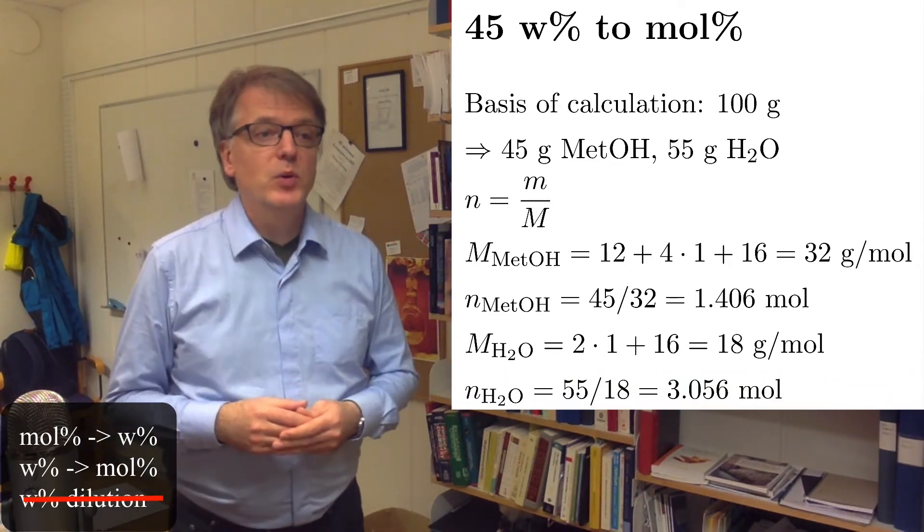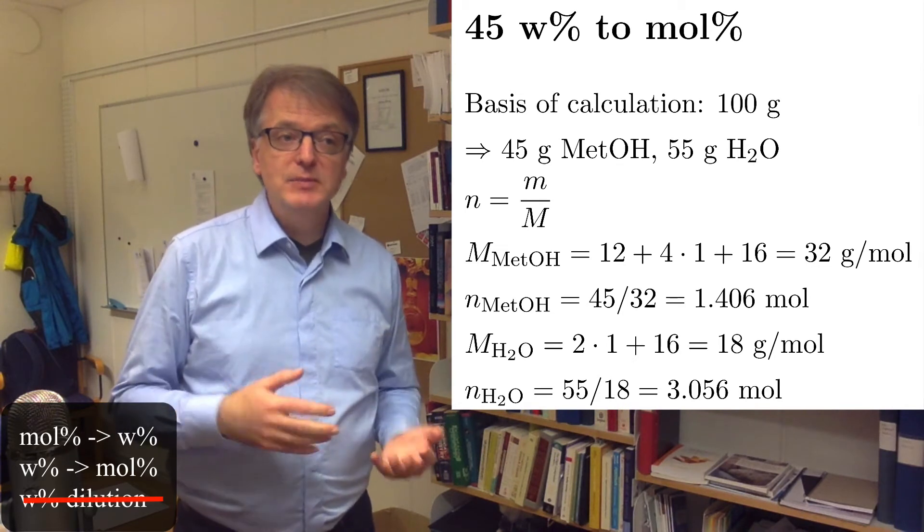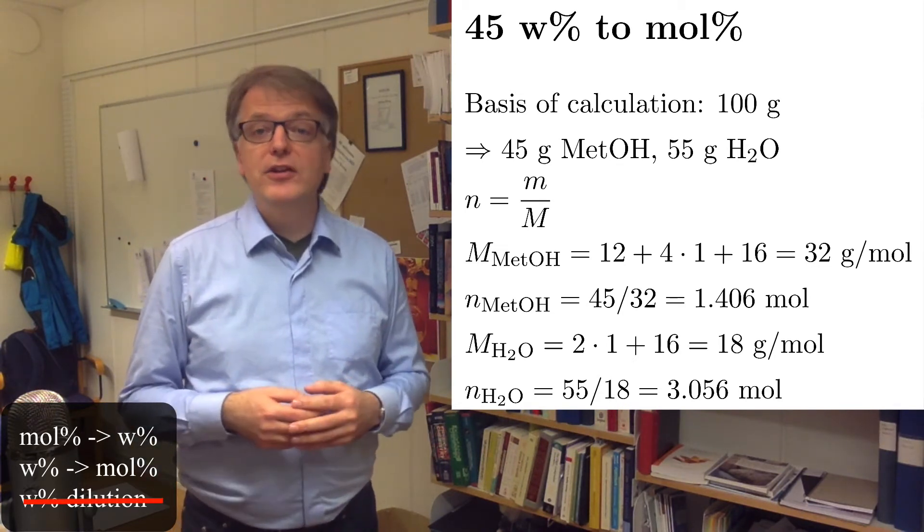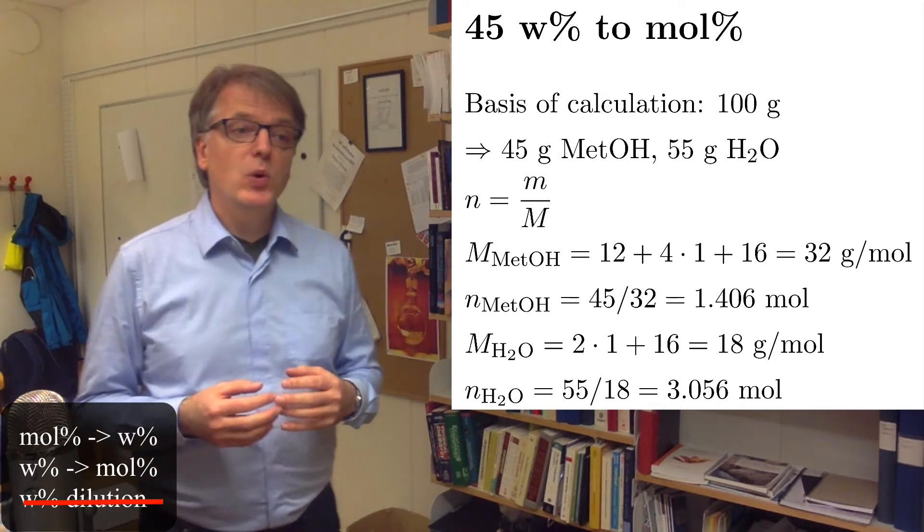So, we get the number of moles of water as 55 grams divided by 18 grams per mole, or something like 3.056 moles of water.